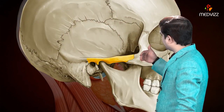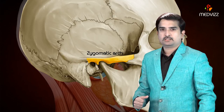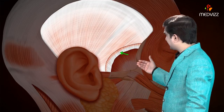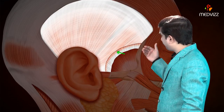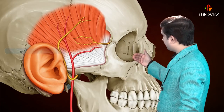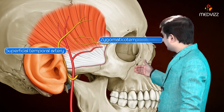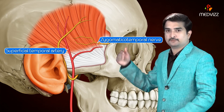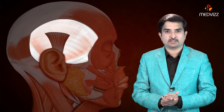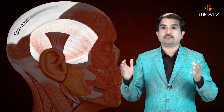The two layers inferiorly are attached to the inner as well as outer lips of the upper border of the zygomatic arch. A small gap between the two layers of the inferior portion of the fascia contains fat, as well as a branch from the superficial temporal artery and the zygomatico-temporal nerve.